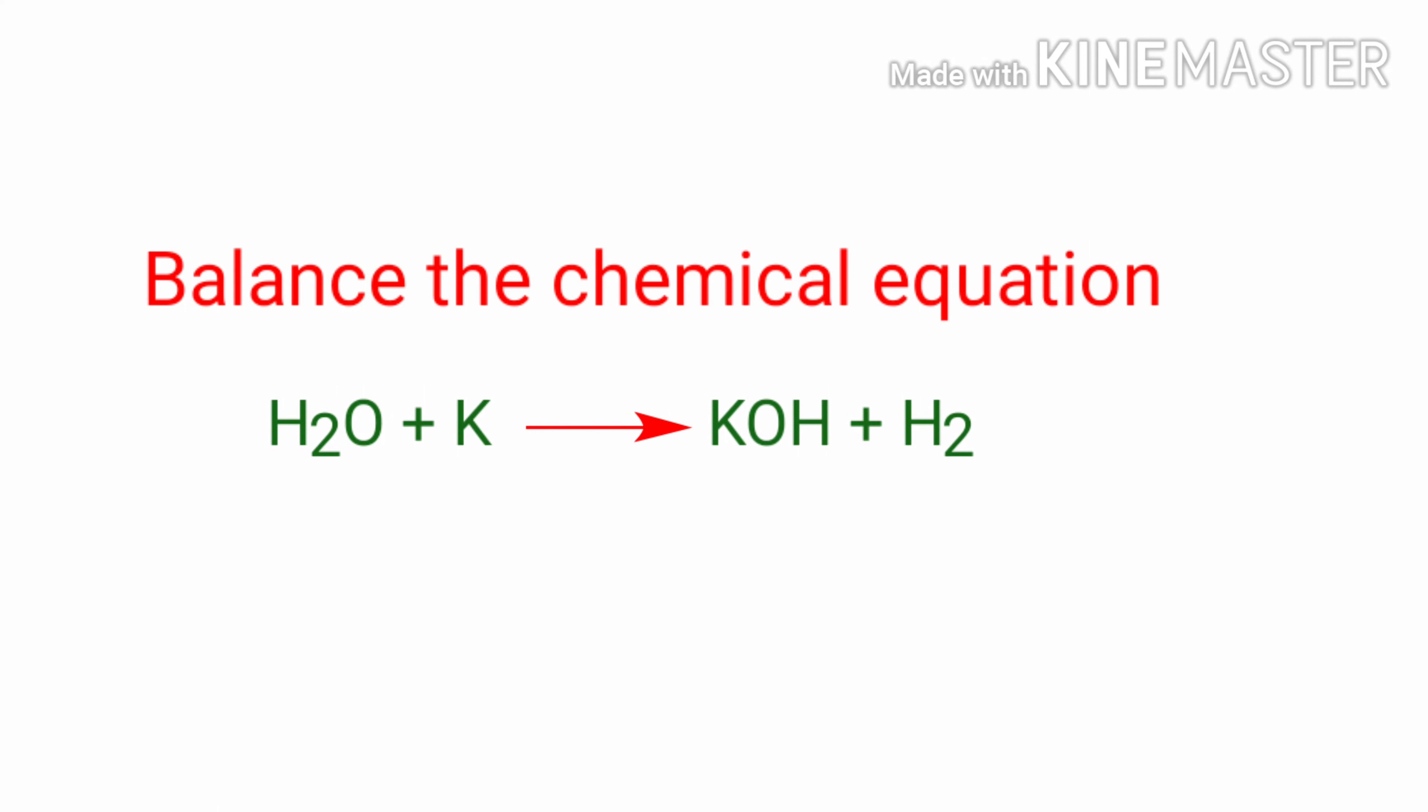Balance the chemical equation: Water plus potassium gives us potassium hydroxide plus hydrogen.